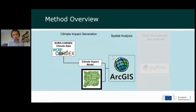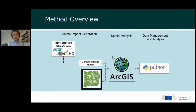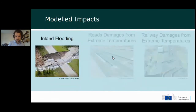We simply overlay our hazard maps with our exposure maps, carry out spatial analysis, and then carry out risk assessment to generate expected annual damages for each of these hazards. I'll fly through each hazard starting with inland flooding and give a quick overview of the methods and a snapshot of results.